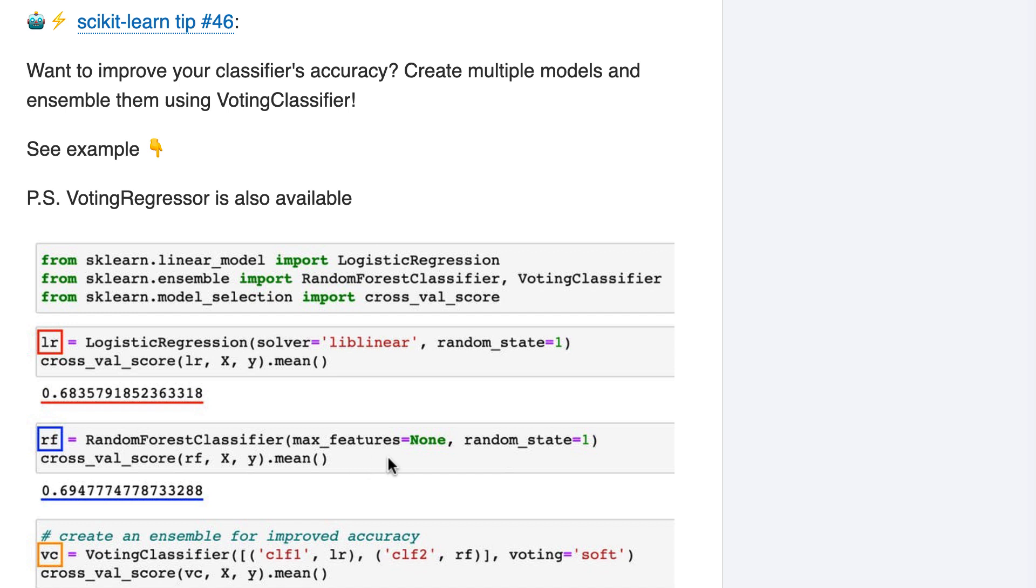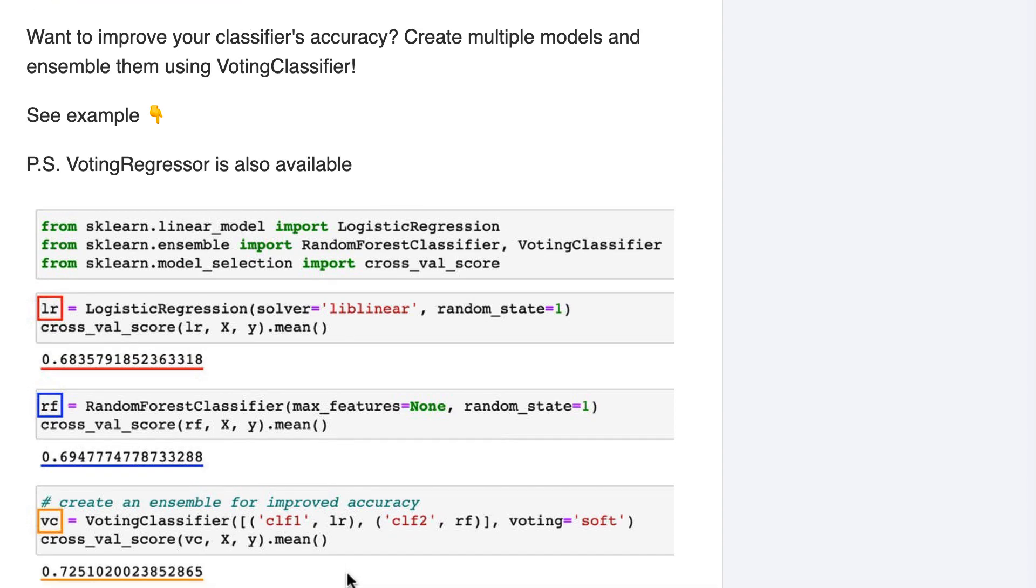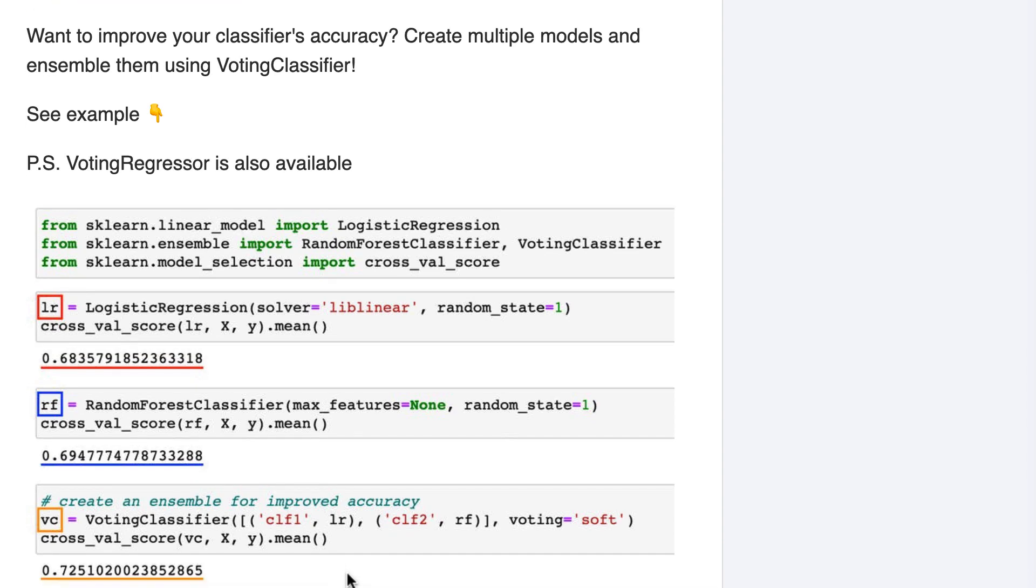Finally, we'll ensemble the two models using voting classifier. I'll explain the code in a minute, but when we cross-validate the voting classifier, it outputs an accuracy of 72%. Thus, we've increased the accuracy by a meaningful amount just by using ensembling.